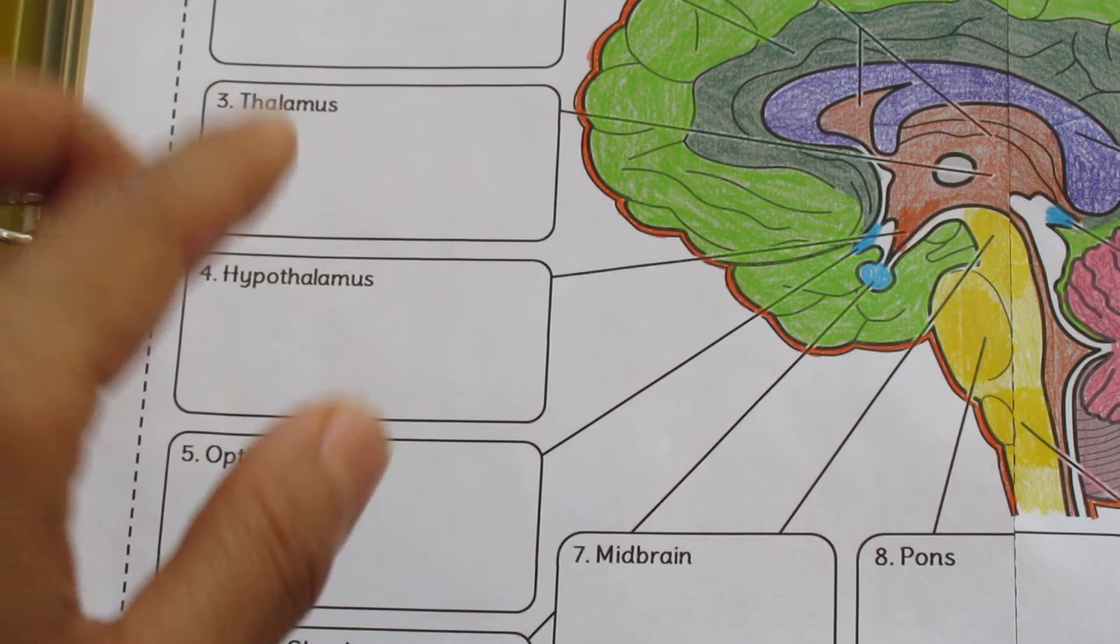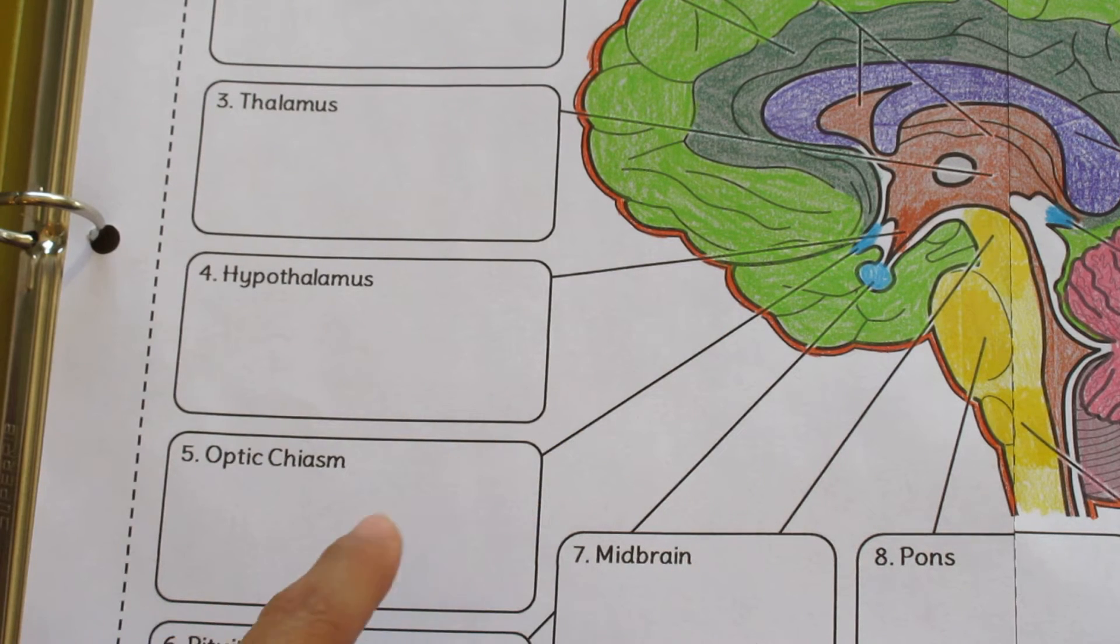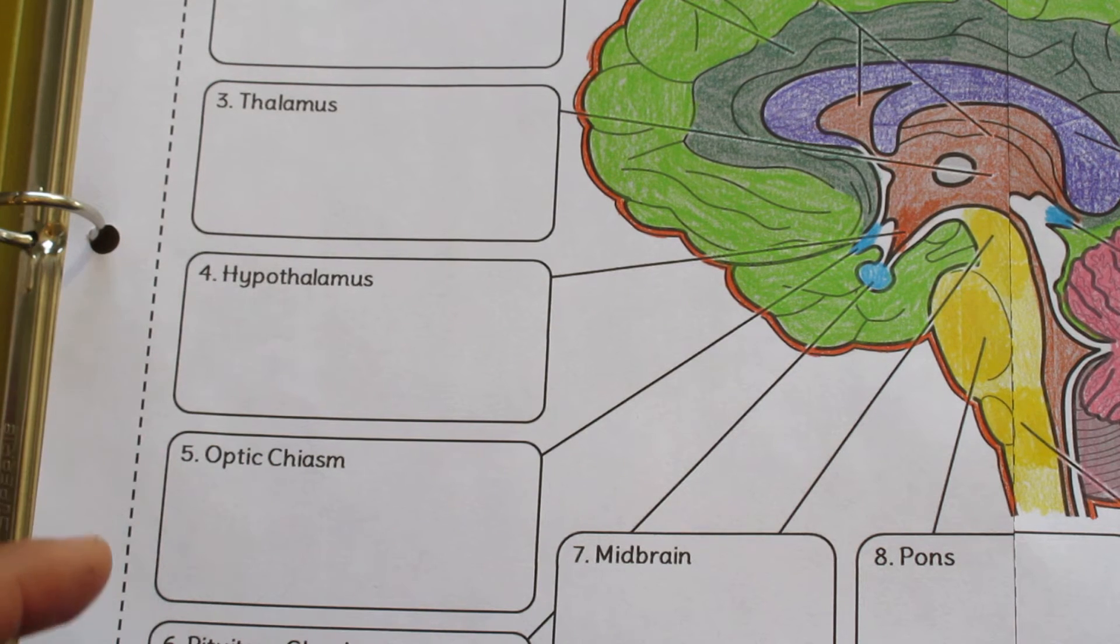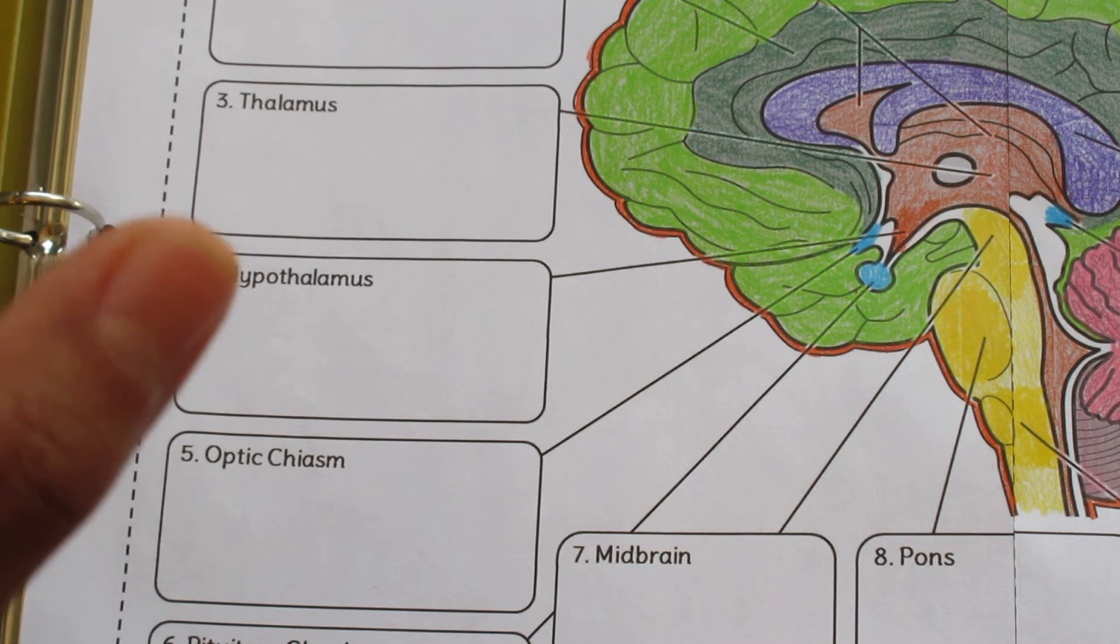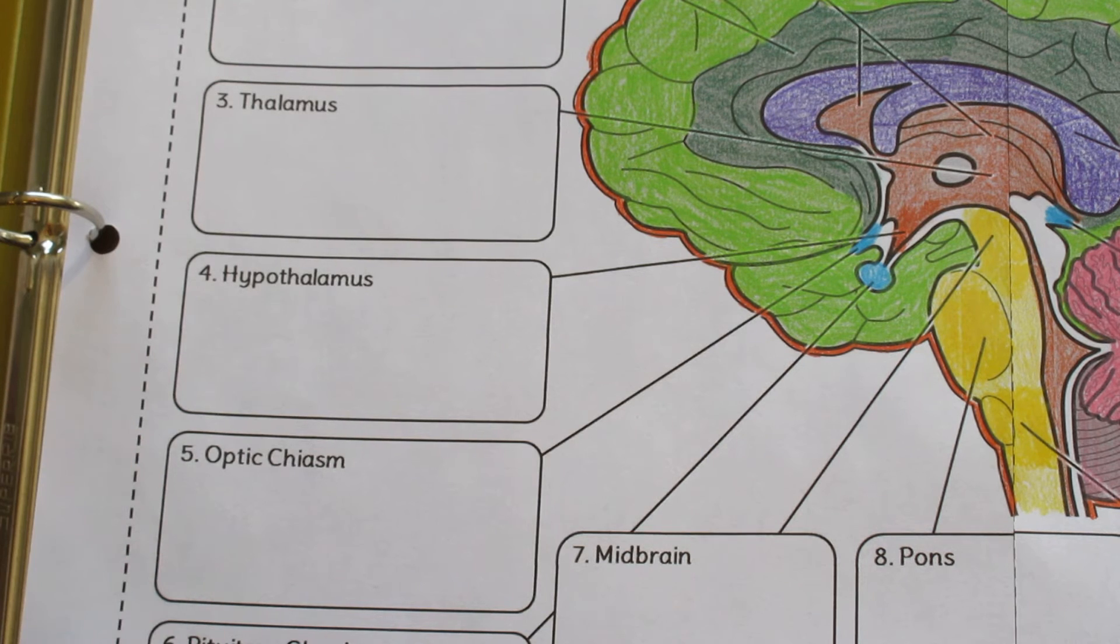Each structure connects to a numbered description box and labels are provided. This allows you to go step-by-step through the lesson and reference each number or label as you go along so that students can always find their place. So you can talk about structure number three, structure number four, structure number five.